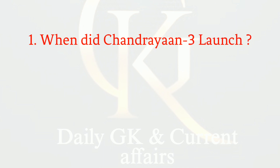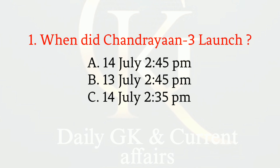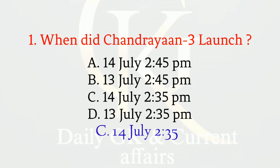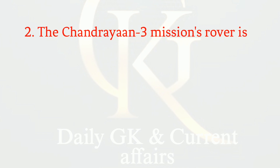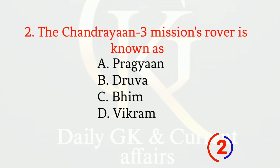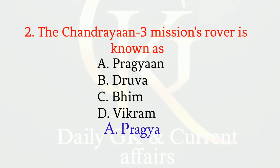When did Chandrayaan-3 launch? The correct option is C: 14 July, 2:35 p.m. The Chandrayaan-3 mission's rover is known as — the correct option is A: Pragyan.